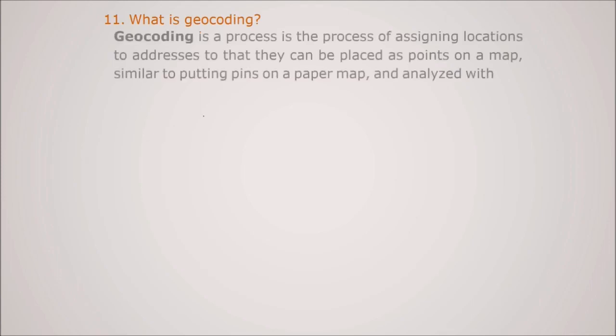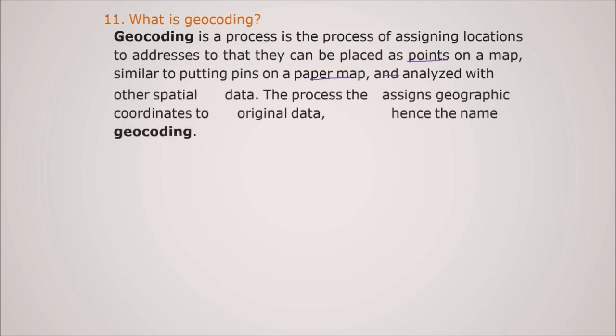What is geocoding? Geocoding is the process of assigning locations to addresses, assigning the location to the addresses, so that they can be placed as points on a map, similar to putting points on a paper map and analyze with other spatial data. The process that assigns geographic coordinates to original data, that is why the name is geocoding.